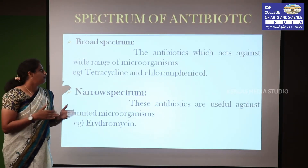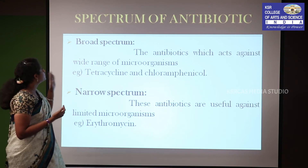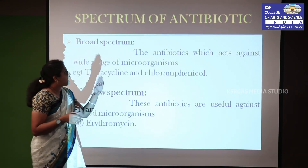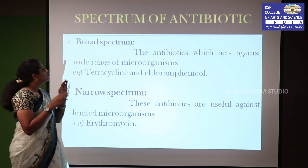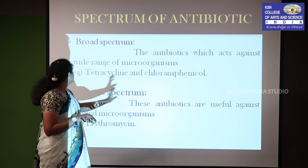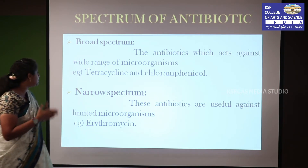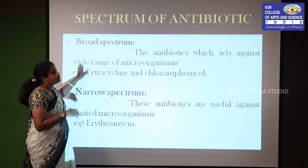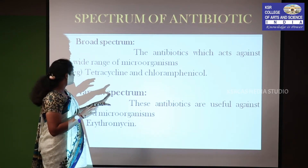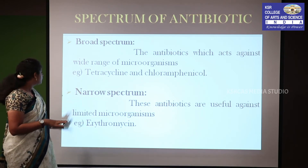Next, spectrum of antibiotics. There are two types: broad spectrum and narrow spectrum. Broad spectrum antibiotics act against a wide range of microorganisms; for example, tetracycline and chloramphenicol. Narrow spectrum antibiotics are useful against only limited or particular microorganisms; for example, erythromycin.